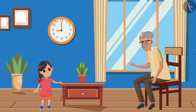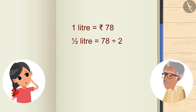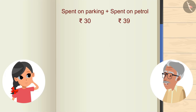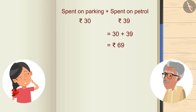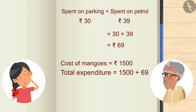And how much does a liter of petrol cost? 78 rupees. So, half a liter will cost half of 78 — if we divide 78 by 2, we get 39. Add 30 rupees of parking to this too. 30 plus 39 is 69 rupees, Grandpa. So, our total expenditure will be 1,500 plus 69.